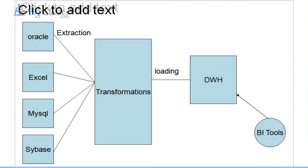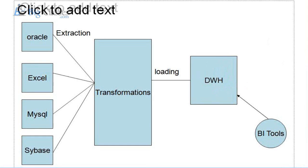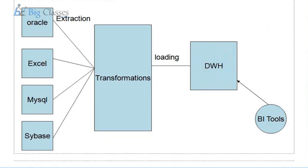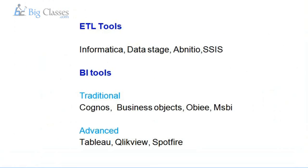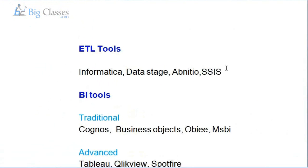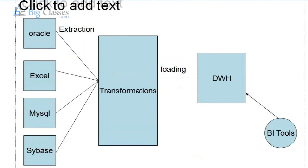This process — extraction, transformation, and loading — requires some tools to complete it. The ETL tools available in the market include Informatica, DataStage, Abnitio, and SSIS. These are all ETL tools. We also have open source tools like Pentaho. With the help of any one of these tools, you make the entire unstructured data structured and the entire data becomes available in the data warehouse.